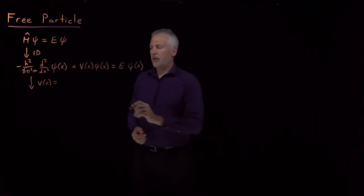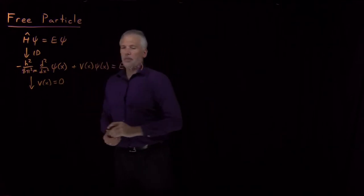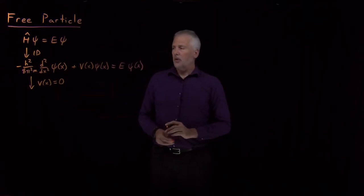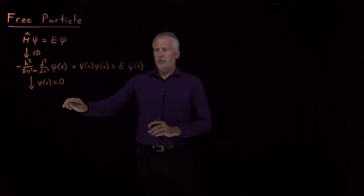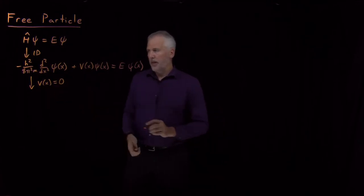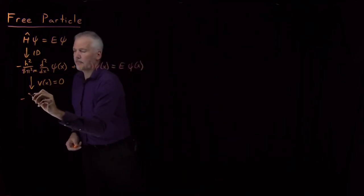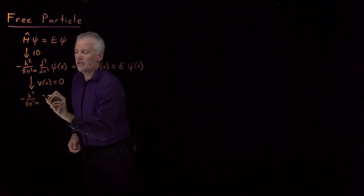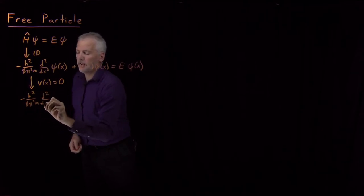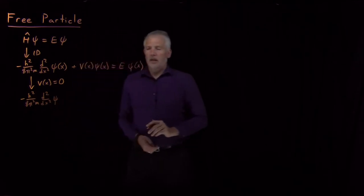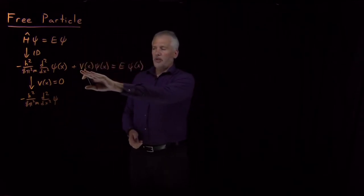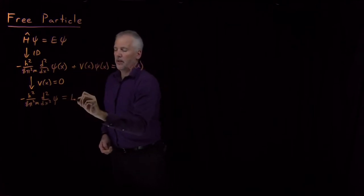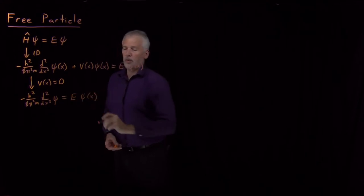Because we're keeping things simple, the simplest we can make the problem is to set the potential energy equal to zero. So the kinetic energy term is still h squared over 8 pi squared times mass, times the second derivative of the wave function. The potential energy is zero, so the PE term goes away, and that equals energy times the wave function.